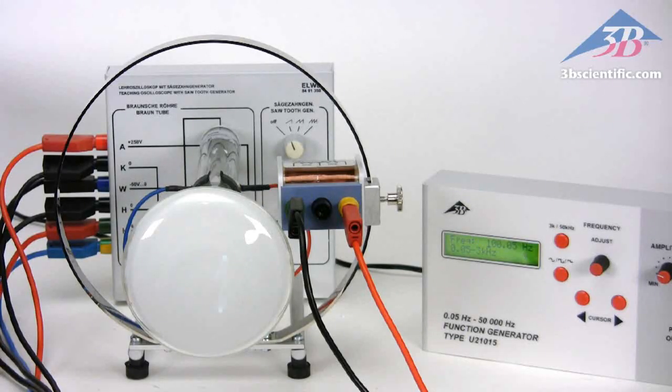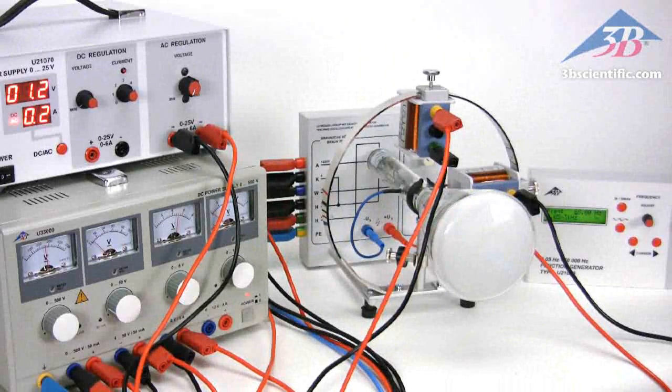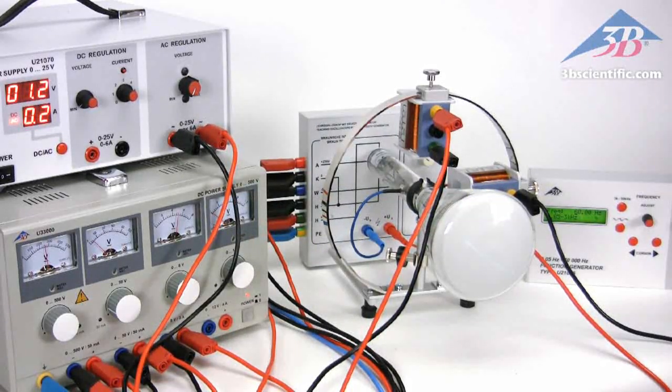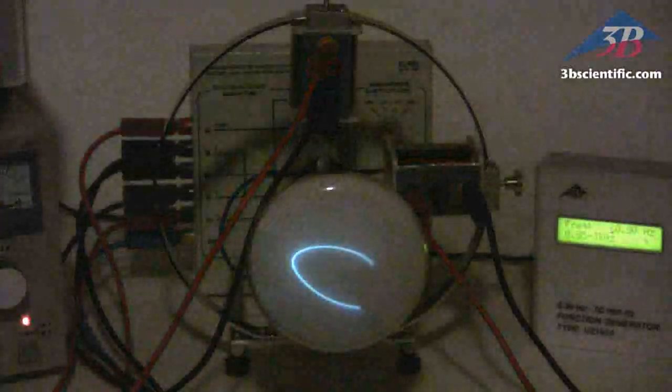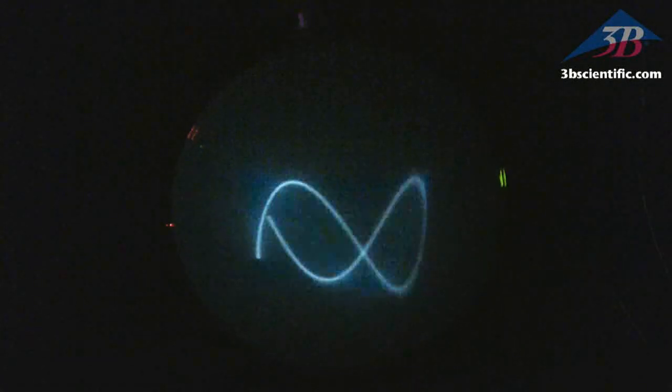Demonstrate how magnetic deflection of the electron beam produces a sine wave. By connecting two function generators to the coils, or a function generator and an AC power supply, it's possible to produce Lissajous figures as the beam is deflected magnetically, both horizontally and vertically.